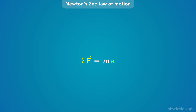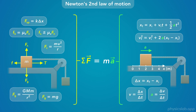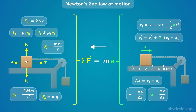Newton's second law is one of the connections between dynamics and kinematics. The left side — the sum of all forces — includes equations and variables for different types of forces. The right side gives us the acceleration, which we can use with kinematic equations to study motion. A problem might give us motion and ask us to find forces, or give us forces and ask about motion, and sometimes it's a combination of both.